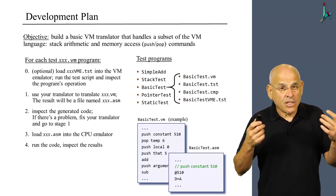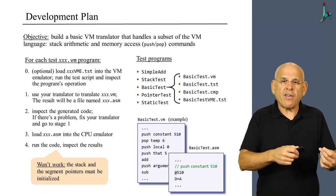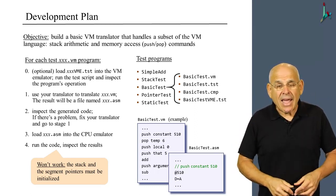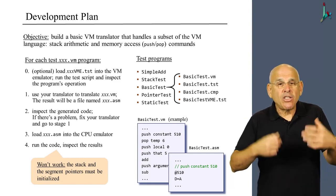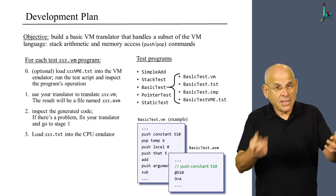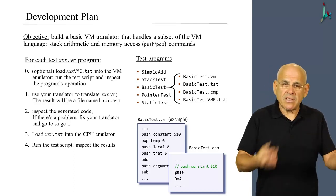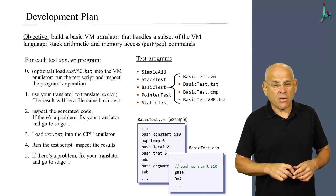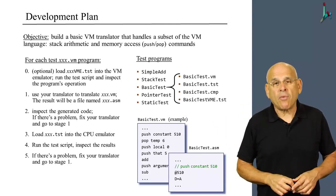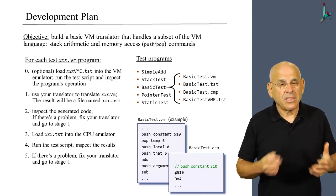Unfortunately, stage four will not work out on its own, because the source VM code and the generated assembly code expect to use the stack and the virtual memory segments, and there's nothing in the source code that initializes these virtual segments and the stack on the host platform. So instead, you have to load the supplied test script into the CPU emulator, execute it, and inspect the results. If there's a problem, go back and fix your VM translator. The test script takes care of all the required initializations, and then the translated code will execute on the CPU emulator correctly.